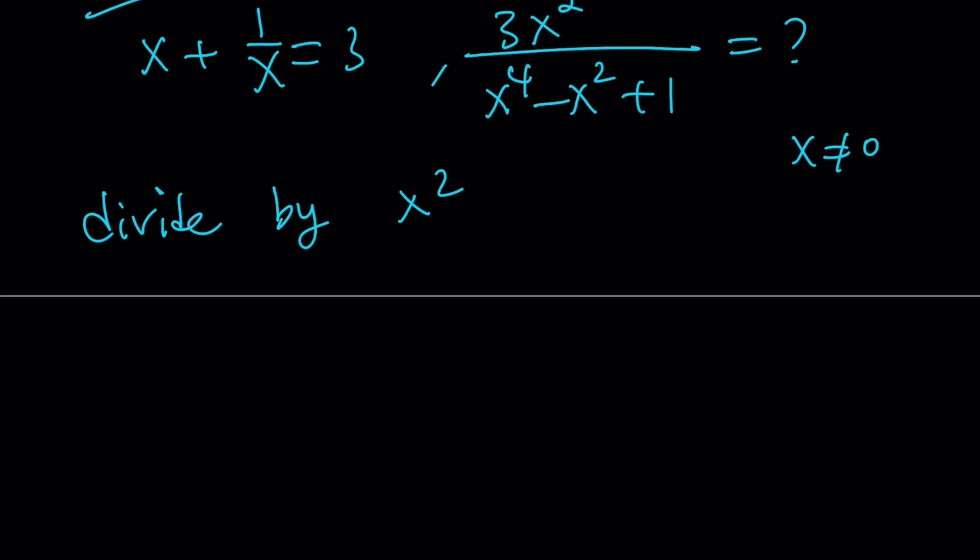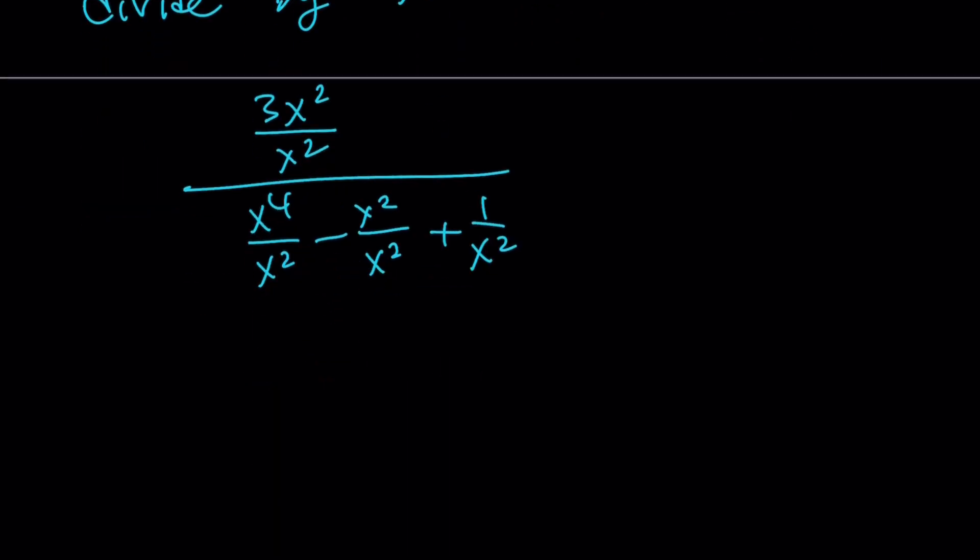So when I divide the numerator by x squared, I end up with that 3, which is nice. When I divide the x to the fourth—if I wanted to show my work, obviously, hopefully I'm not skipping too many steps here. This is what it would look like. I know some people sometimes will say, hey, you're going way too fast. And I realize I do. But anyways, let me go ahead and show my work. Divide everything by x squared.